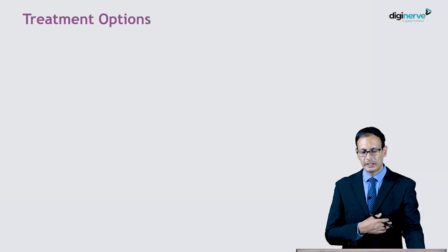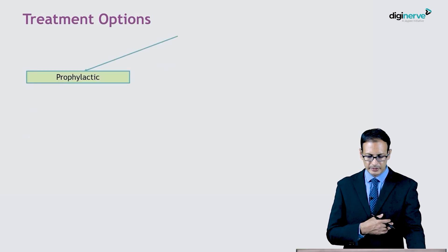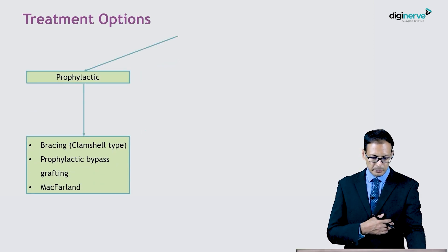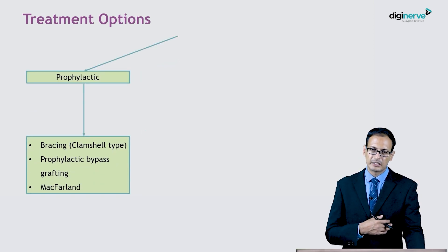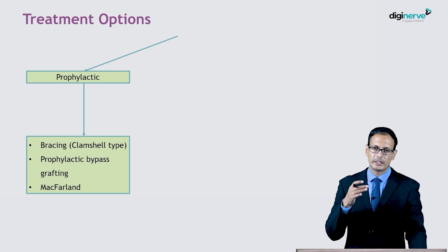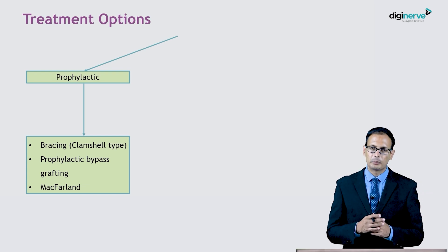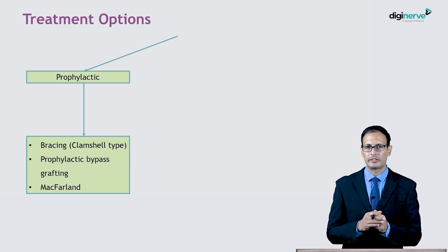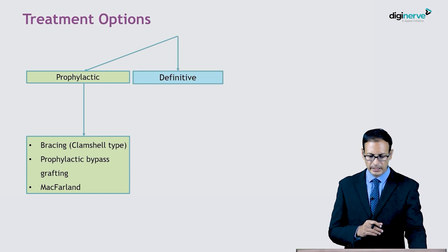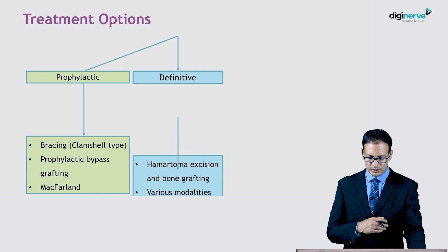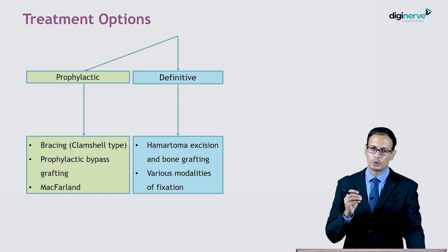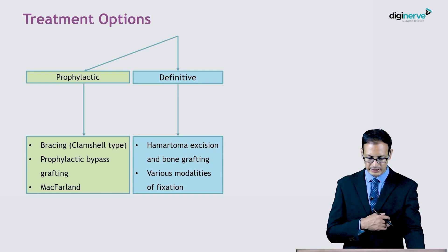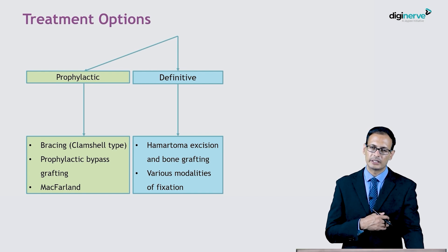Treatment options in CPT include prophylactic, which includes bracing — the clamshell type of bracing, which is circumferential bracing holding the whole leg together — or prophylactic bone grafting of the classical McFarlane type. Definitive treatment includes treatment of pseudoarthrosis and achievement of union by hematoma excision and various modalities of fixation after copious bone grafting.